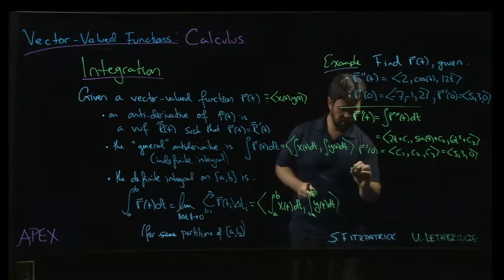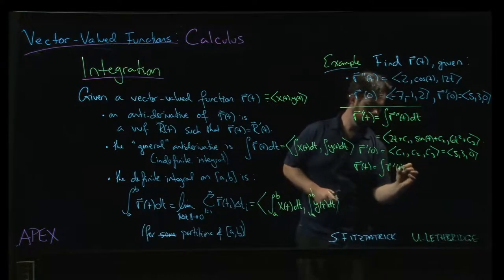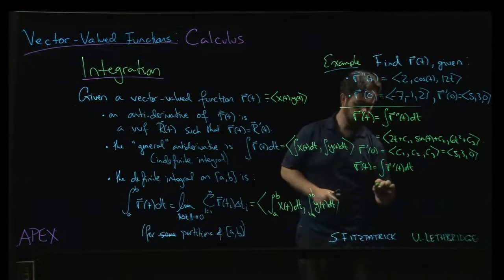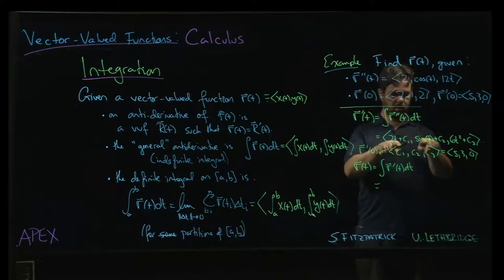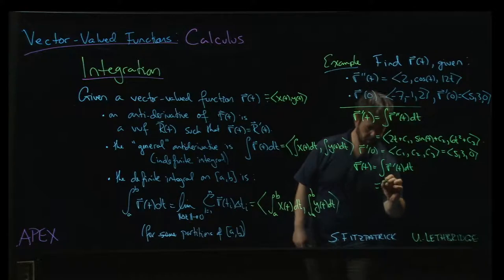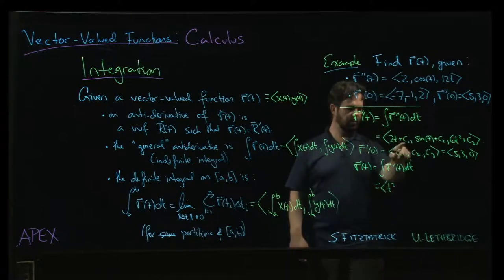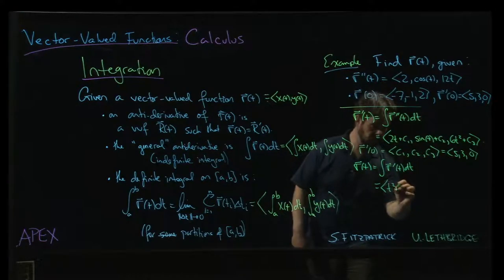Now we can calculate r of t. r of t will be the indefinite integral of r prime. And so again, we just apply the indefinite integral term by term, starting here, right? So 2t integrates to t squared. Now c1 is actually 5, right? So that 5 is going to integrate to, let's say, 5t.